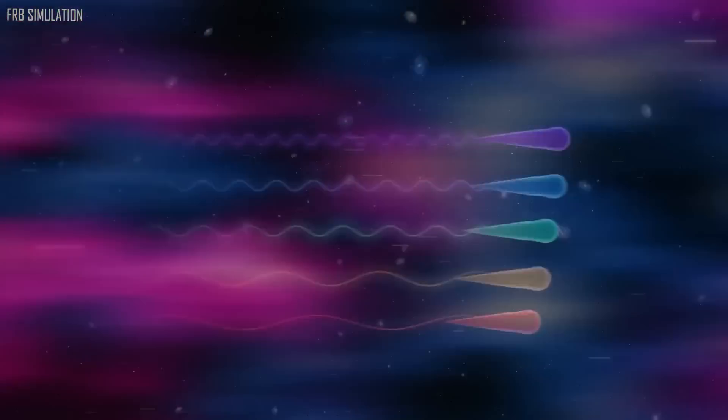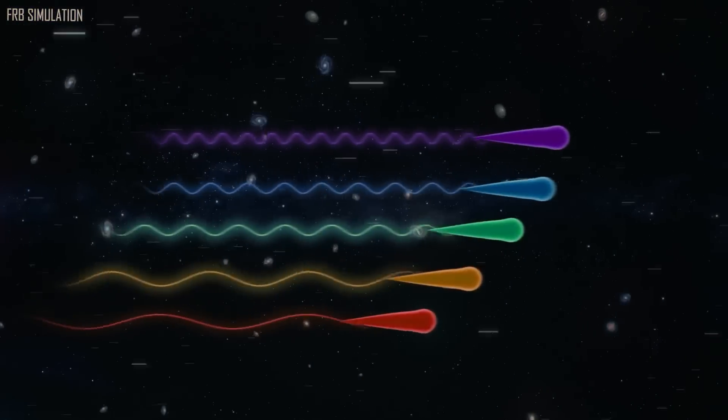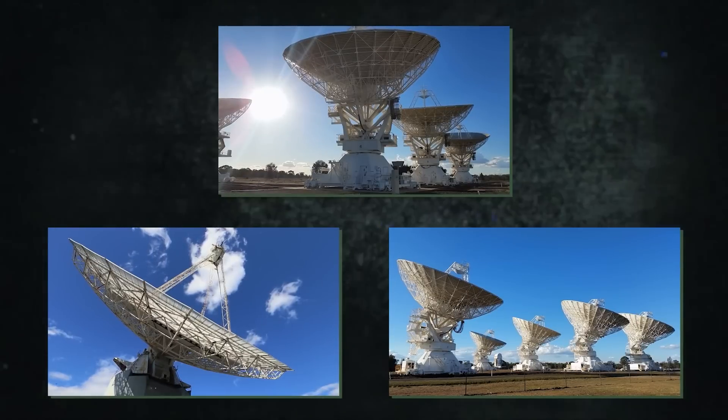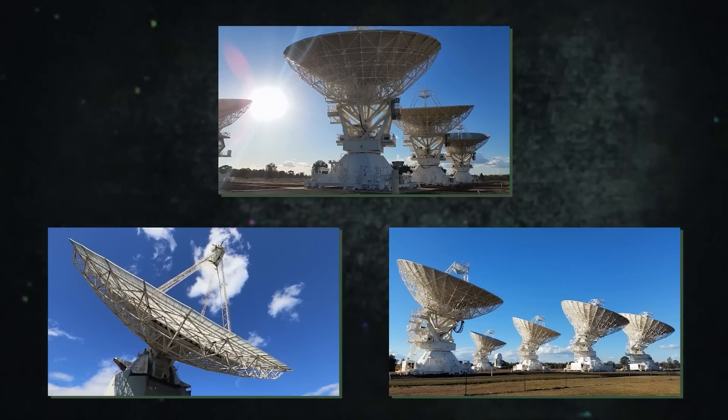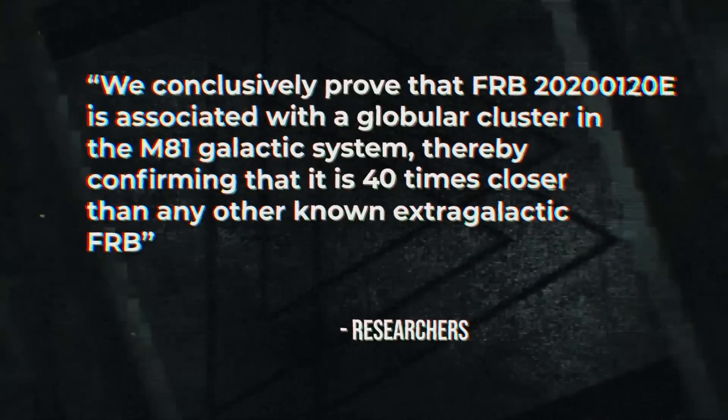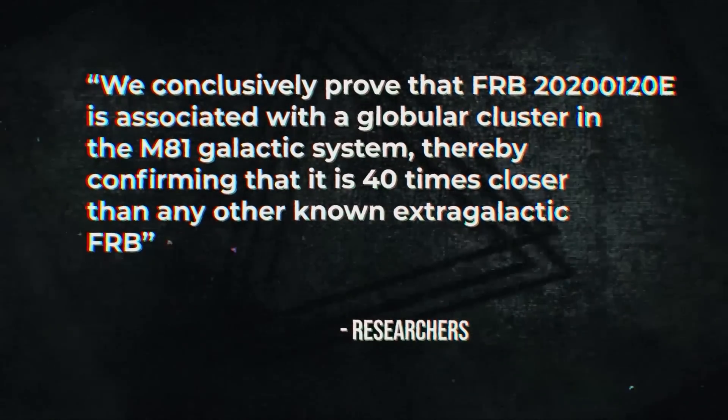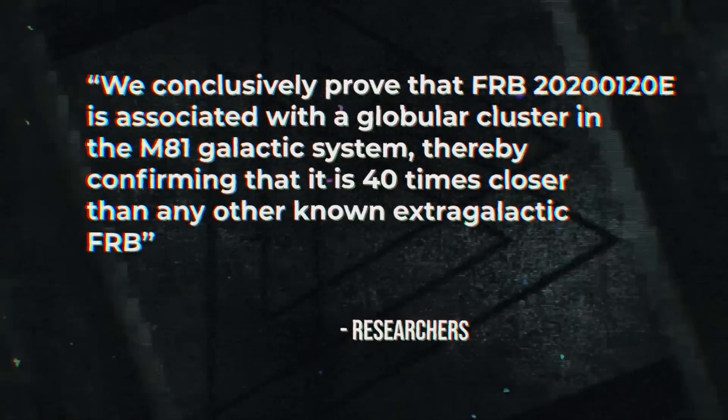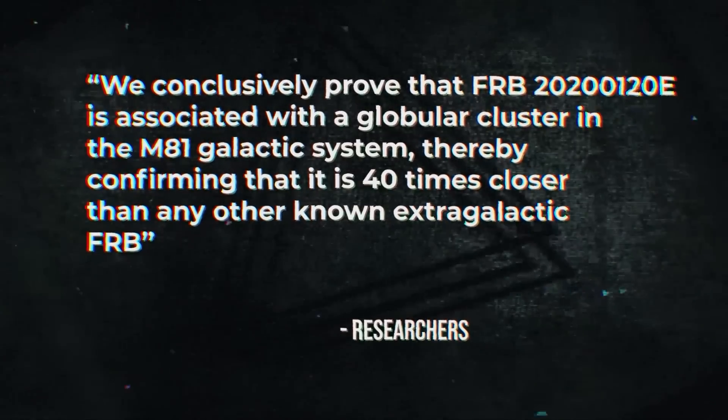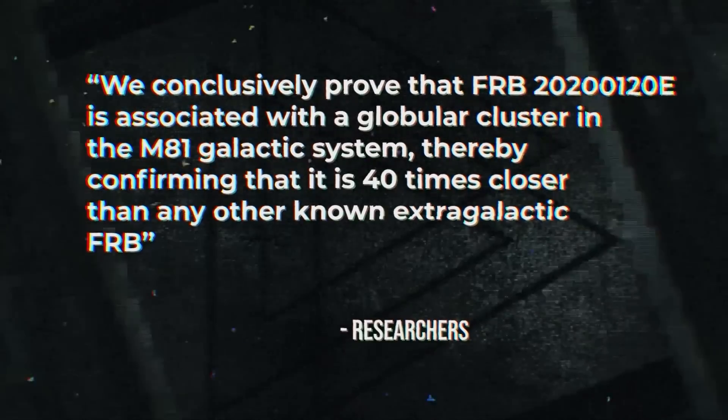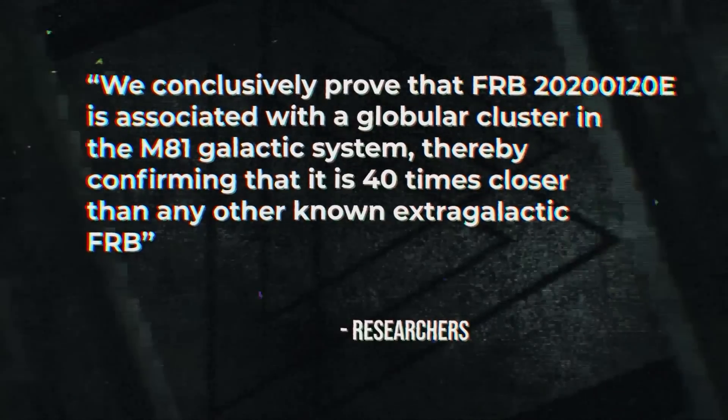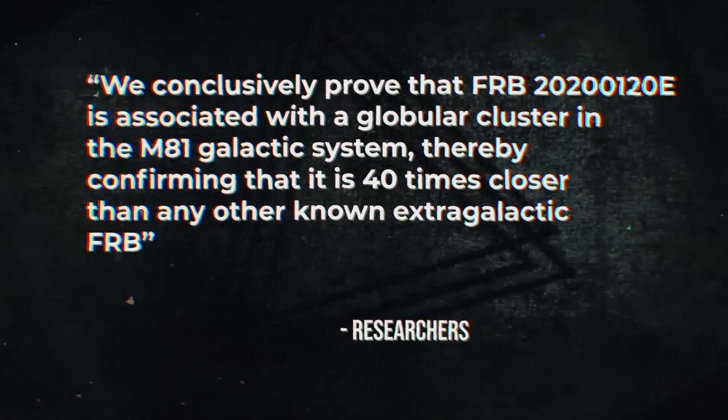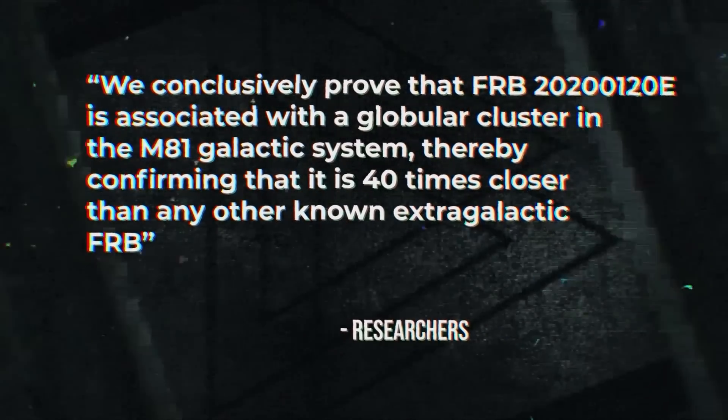The specific location of the burst was then determined by scientists using a network of radio telescopes called the European Very Long Baseline Interferometry Network. We conclusively prove that FRB-2020-01-20-E is associated with a globular cluster in the M81 galactic system, thereby confirming that it is 40 times closer than any other known extragalactic FRB, according to the researchers.